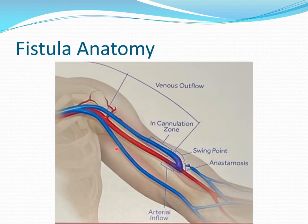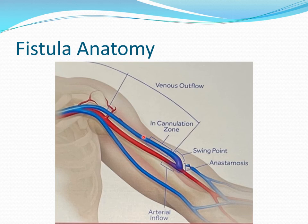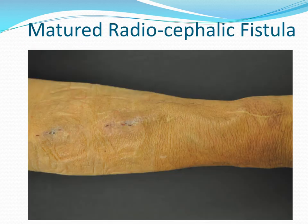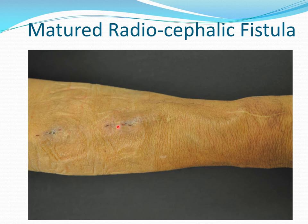The various parts of the fistula are: the inflow artery, site of anastomosis, the swing point where the vein is transected and brought to the artery, the cannulation zone where dialysis needles are placed, then the outflow vein and the central vein. This is a good example of a matured fistula — a radial to cephalic fistula where the vein has well developed, is easy to identify and locate, with satisfactory caliber to place a 15-gauge needle and enough length to place two needles for dialysis.